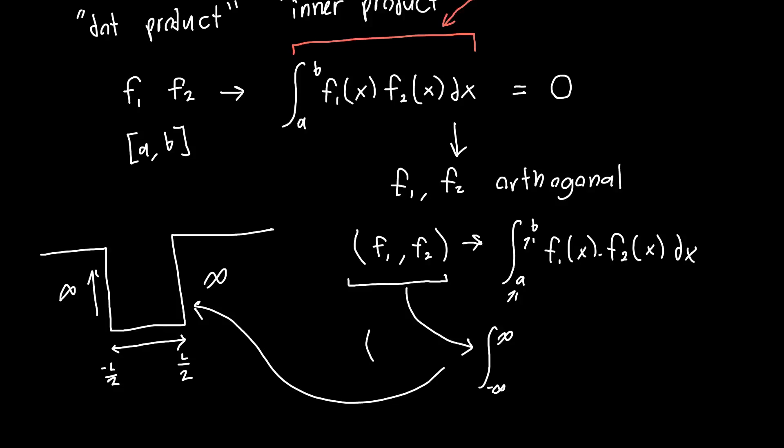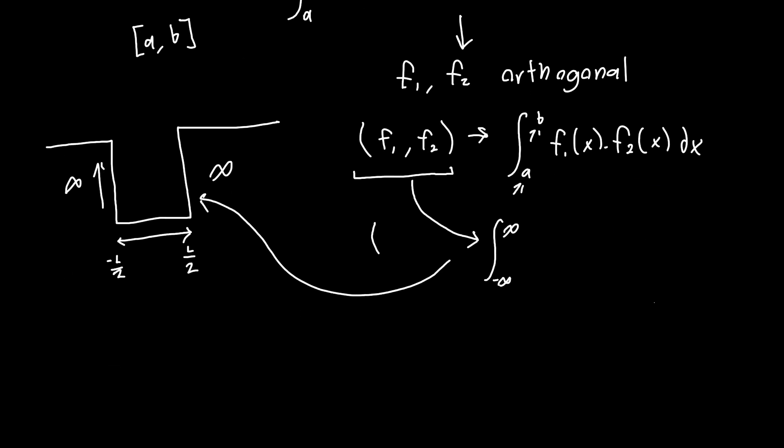There are other ways of representing this inner product. Some people like to use, for example, (f1, f2). In quantum mechanics, the most common notation uses bra-ket notation, in which case you'd write the inner product like this. I'm going to be sticking primarily with this notation because I don't want to go into the details of bra-ket notation—it's really not useful for most of what we're going to be doing in optoelectronics and it greatly complicates understanding.